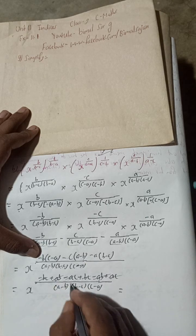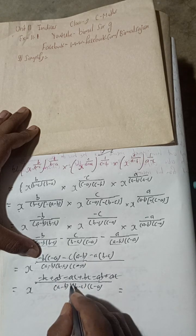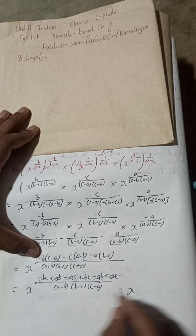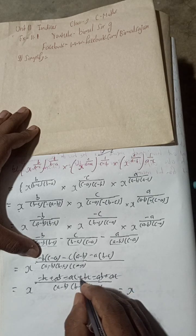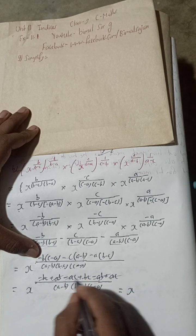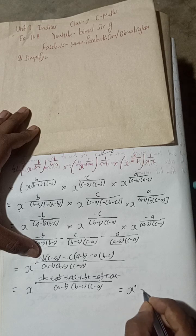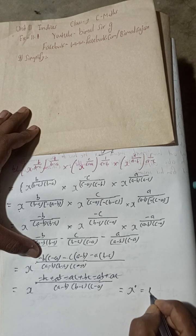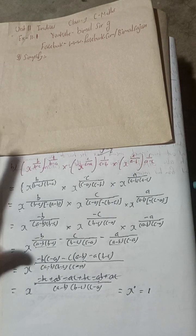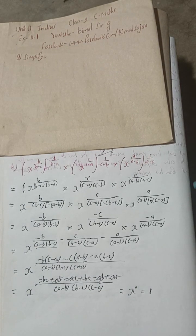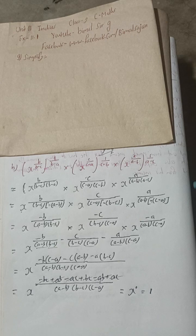The power is 0, and 0 divided by anything is 0, so this is x to the power 0, which equals 1. So 1 is the required solution of this question.